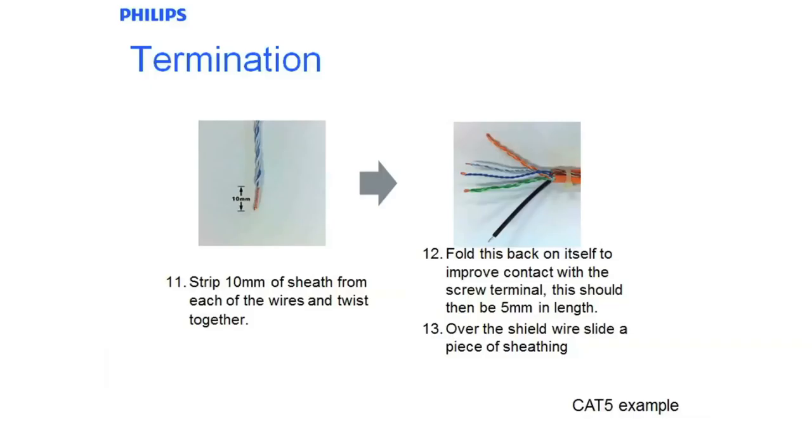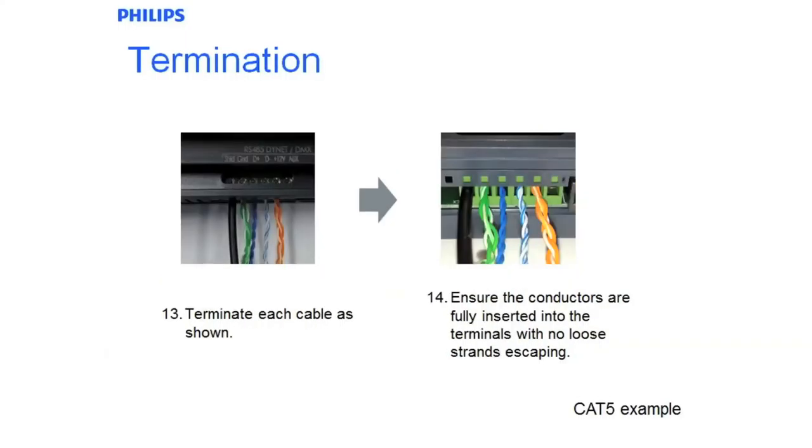Ensure with the shield that you slide some PVC or some heat shrink over it to give it some shielding. If you don't have that available, use some of the outer orange sheath which you have already cut off. Use that and slide that back over as a bit of cheap protection. Terminate each of the cables as shown, making sure there is no excess copper hanging out of the terminals.